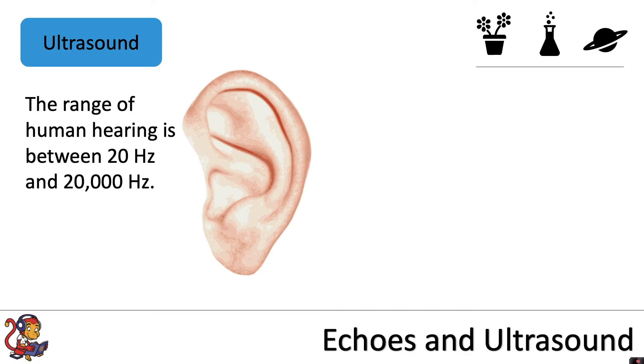The range of human hearing is between 20 hertz and 20,000 hertz, and sounds above 20,000 hertz are called ultrasound. We can produce sound waves that are above our range of human hearing, so we can't actually hear them.